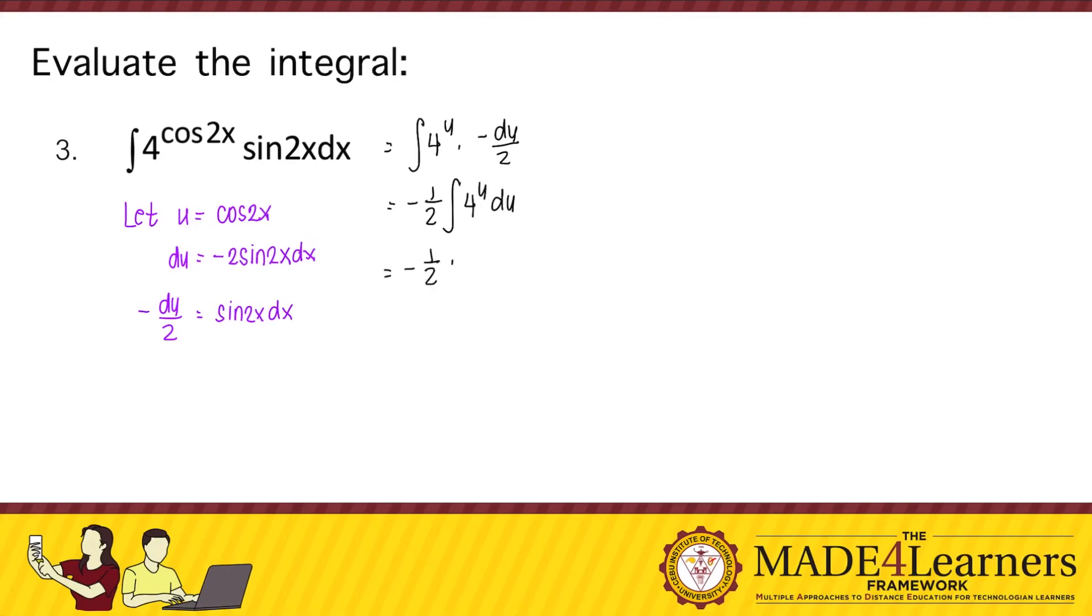Using the integration formula, that's negative 1 half, 4 to the power of u over ln of 4 plus c. We have that negative 4 to the power of u over 2 ln of 4 plus c.